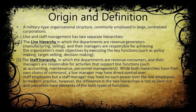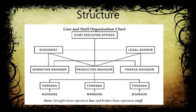In modern practice, the difference between the two hierarchies is not so clear, and jobs often have elements of both types of functions. Who has to control and who has to abide depends upon the department and the organization. The chief executive officer has a marketing manager, production manager, and finance manager. The production manager has foremen and workers, supported by the legal advisory department.